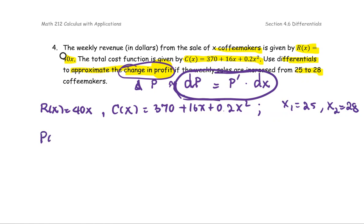Form the profit function by subtracting the revenue by the cost function. The revenue is 40x subtracted by the quantity 370 plus 16x plus 0.2x squared.